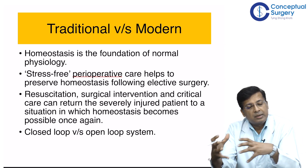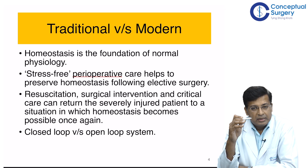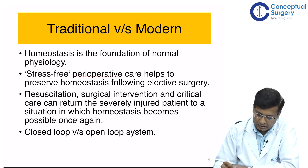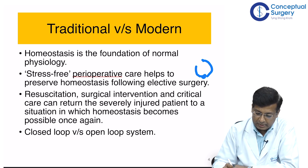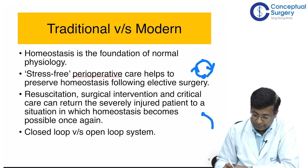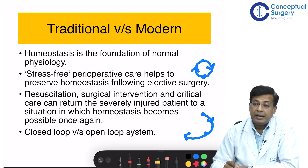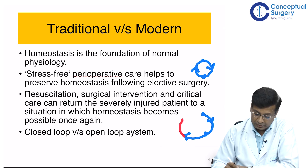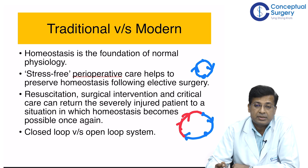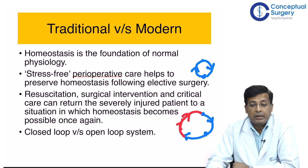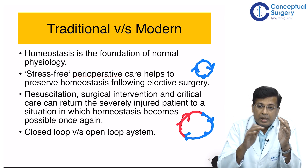The closed loop is the traditional concept wherein there is an insult, a cascade rolls, homeostasis occurs, and the body comes back to normal. The modern concept is that there is an insult which is severe enough that, despite the body's best ability, it will not restore back to normal until there is intervention — in the form of surgical or critical care intervention — which helps close this loop. The line drawn in red represents the modern concept, where modern surgery, critical care, and resuscitation bridge the gap and close the loop that was open.